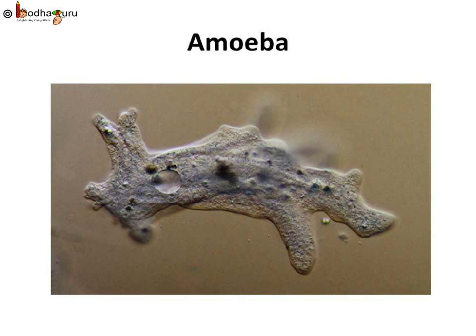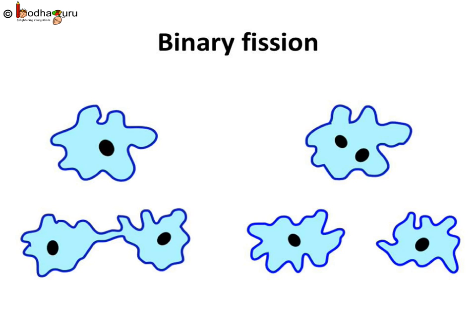There are many organisms which have only one cell — we call them unicellular organisms. For example, amoeba has only one cell. The amoeba cell divides into two once its nucleus gets matured. First, the mature nucleus divides into two nuclei, and then the cytoplasm divides around the end of nucleus division, so each part gets one nucleus. This type of asexual reproduction, in which an animal reproduces by dividing into two individuals, is called binary fission.